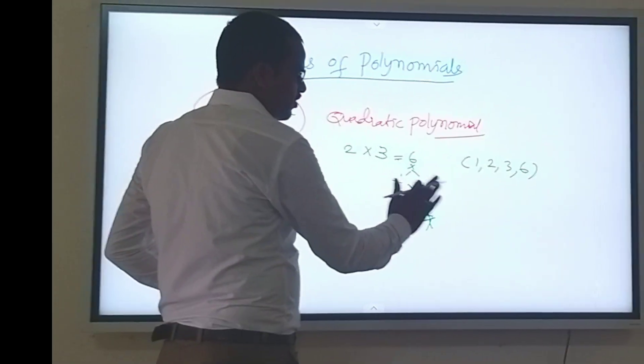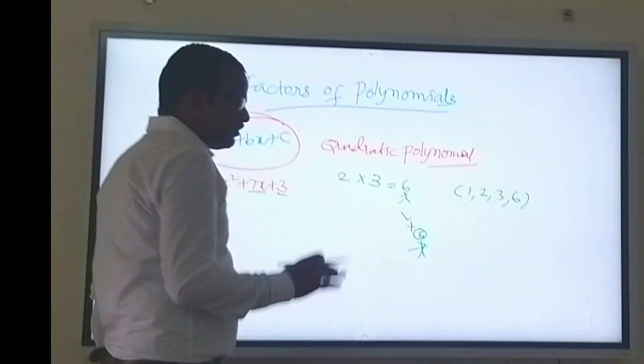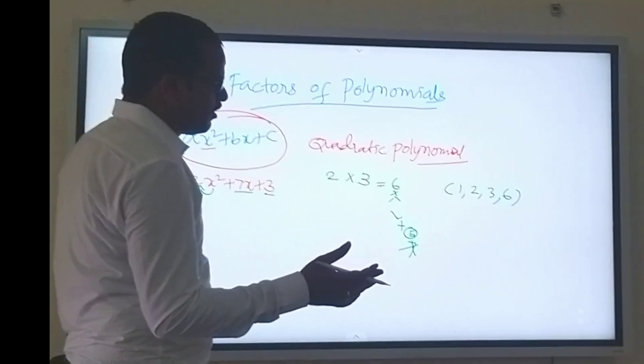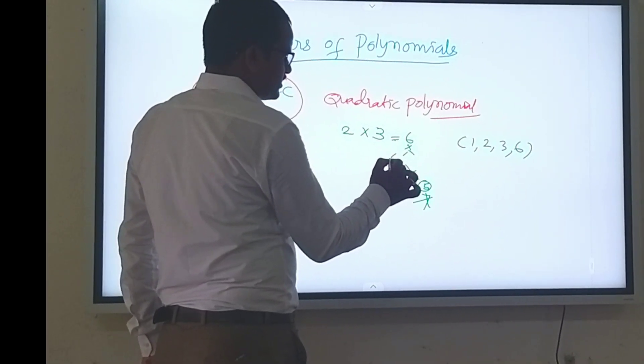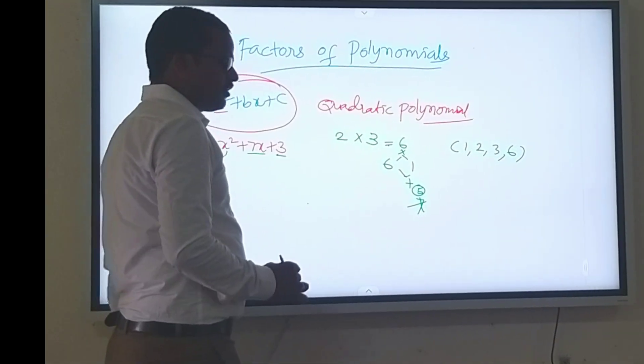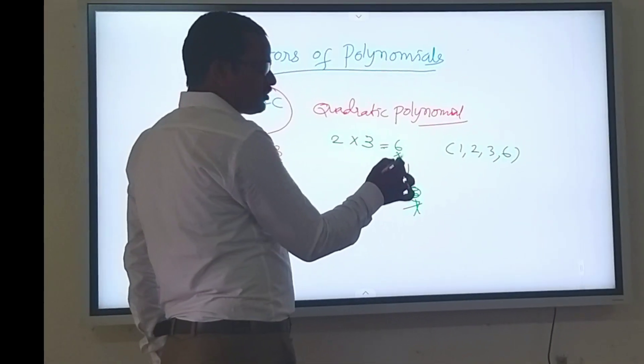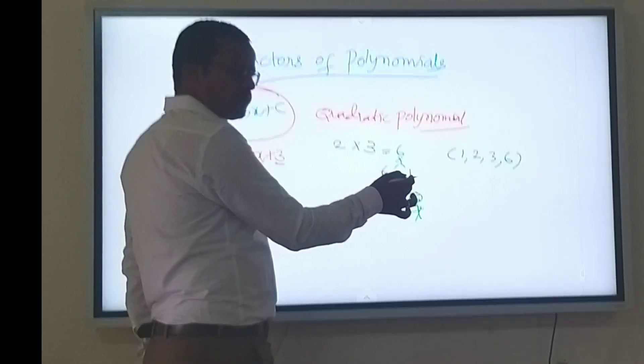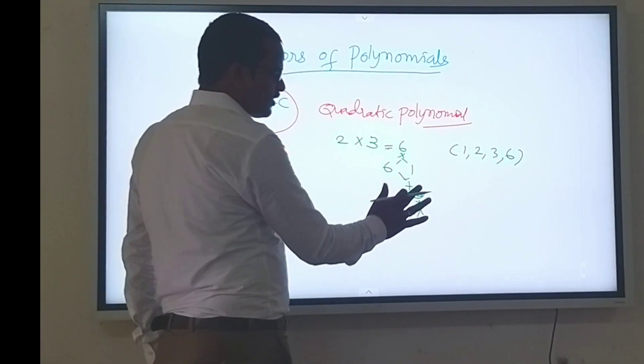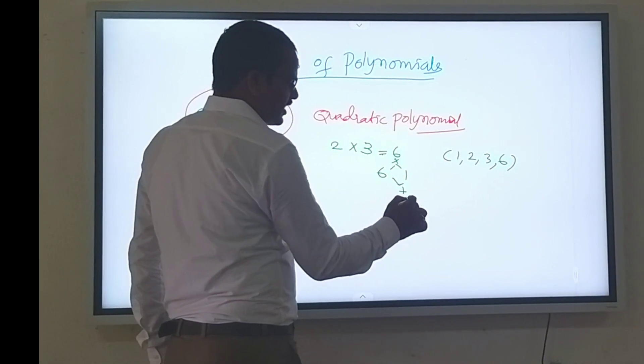So it is wrong. Now we have to consider another factor: 6 into 1. If you multiply 6 into 1, you got 6. If you add 6 plus 1, how much you get? 7. Is it correct? Yes.